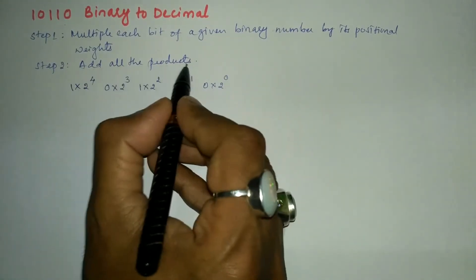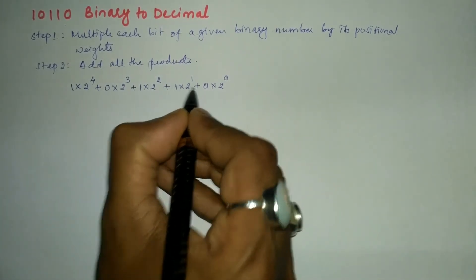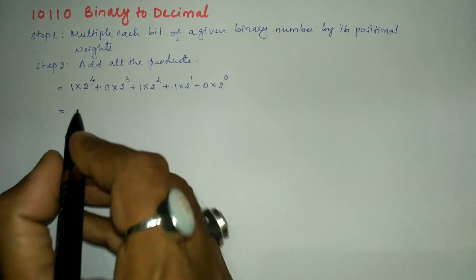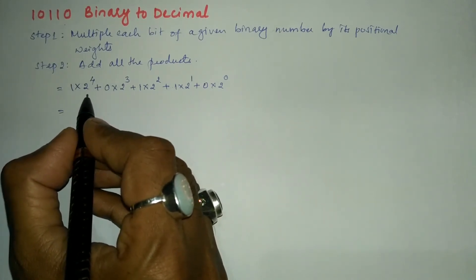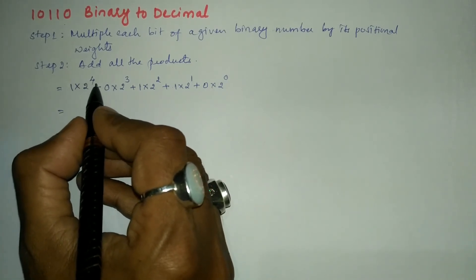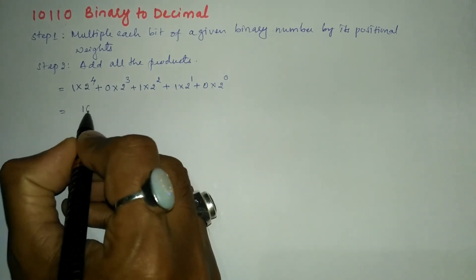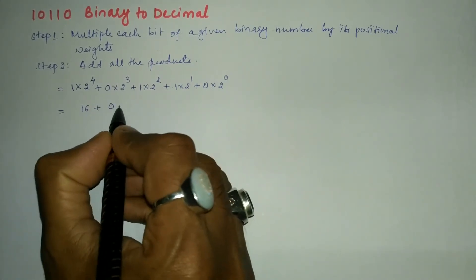Step two says add all the products, so here I'm going to add all of these products. Now let us further simplify. 2 to the power 4 means we have to multiply 2 four times: 2 to the 4, 4 to the 8, 8 to the 16, so 16×1 = 16. Plus 0 into anything is 0. This plus...